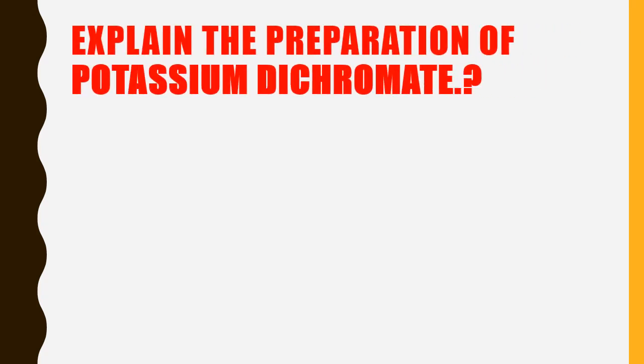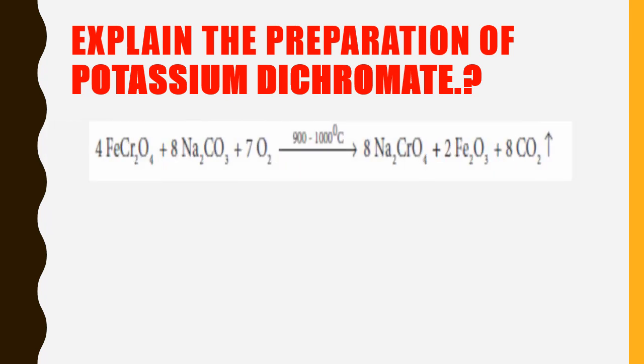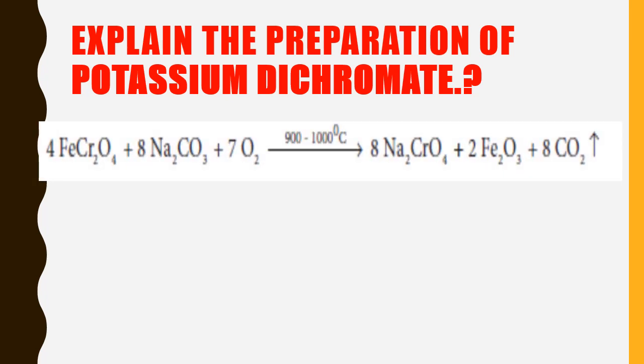Explain the preparation of potassium dichromate. Here three reactants are given. One of the reactants is ore, FeOCr2O3, which we can also write as FeCr2O4. The ore name is chromate ore.